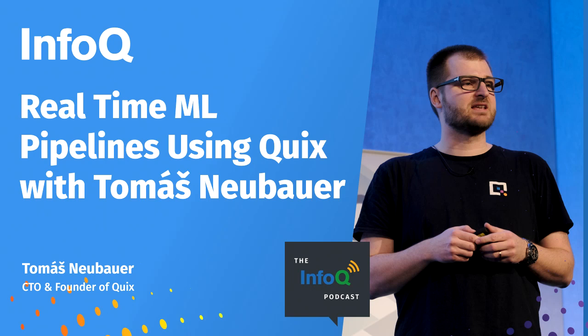Which programming language are you using for this? I'm using the open-source library Quix Streams, so I'm using Python. I basically start with having just data from the app — telemetry data like G-force sensor, GPS location, speed, etc. And I use a machine learning model that has been trained on historical data to detect that the cyclist crashed. It's a TensorFlow model, and we train it beforehand in Google Colab. We label data correctly, and I'm going to talk about how to get that model from Colab to production.